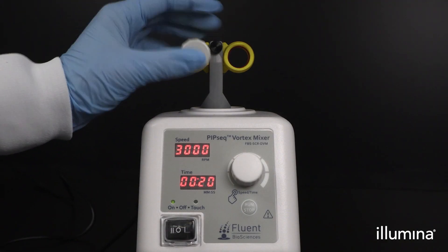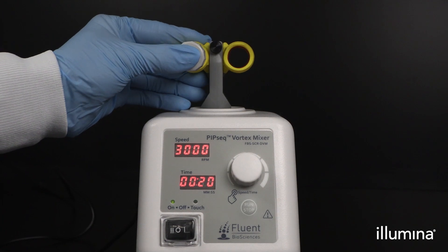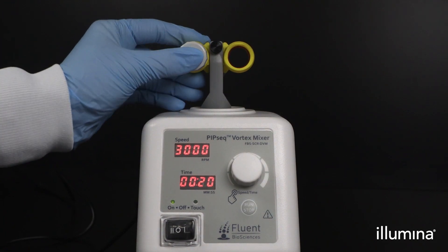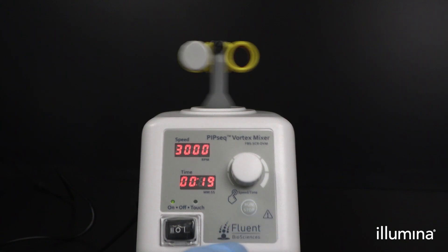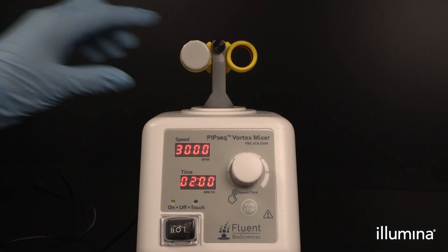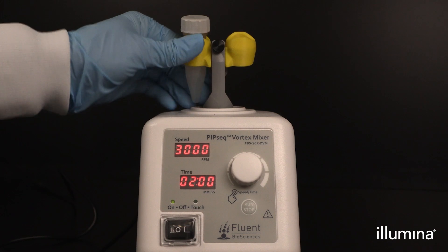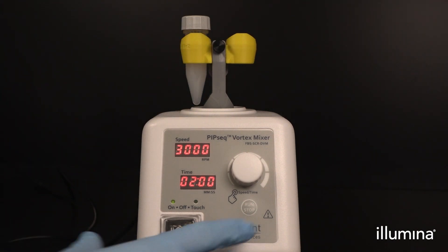Tightly cap tubes and place one tube in the rotating vortex adapter in the horizontal configuration. Ensure the tube is fully inserted into the adapter. It is recommended to process one sample at a time through these vortexing steps. The sample will be vortexed for 20 seconds in the horizontal configuration, followed by 2 minutes in the vertical configuration at 3000 RPM.